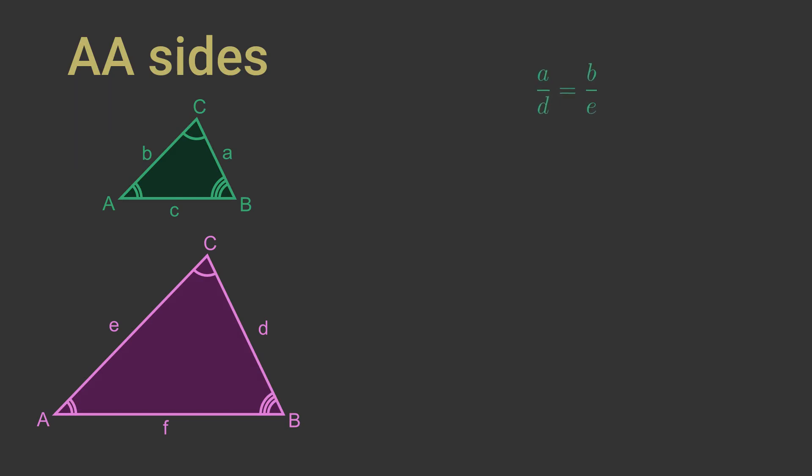Now we can do exactly the same thing with angles A and C and sides A, C, D and F. We won't go through it all again but the end result is that A over D equals C over F. Combining these two equations gives us side A divided by side D equals side B divided by side E equals side C divided by side F. Which is exactly what we set out to prove.